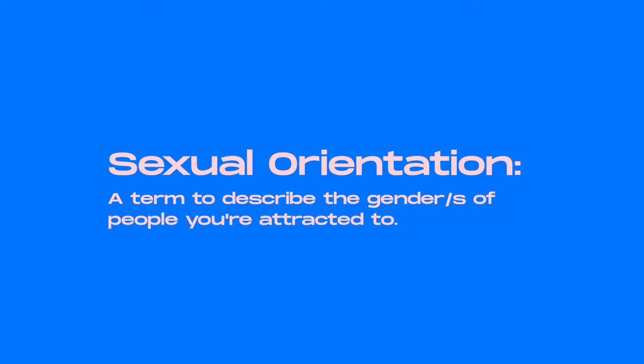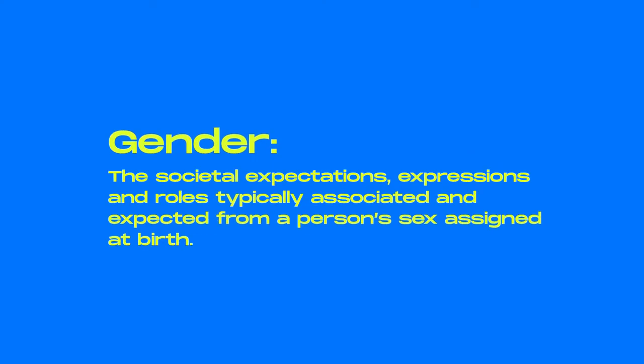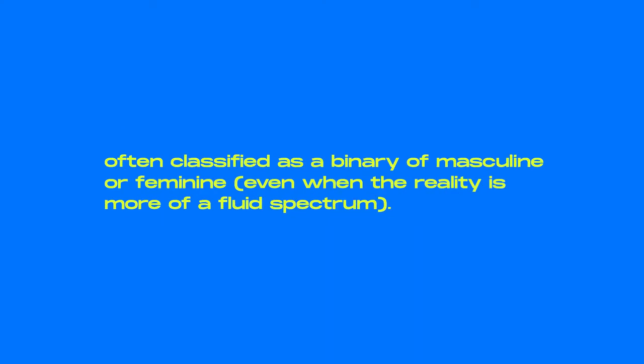Sexual orientation describes the gender or genders of the people that you're attracted to, or not, if you identify as asexual or aromantic. Meanwhile, gender refers to the societal expectations, expressions, and roles typically associated with and expected from a person's sex assigned at birth, often classified as a binary between masculine and feminine, even if the reality is a lot more of a spectrum than that.